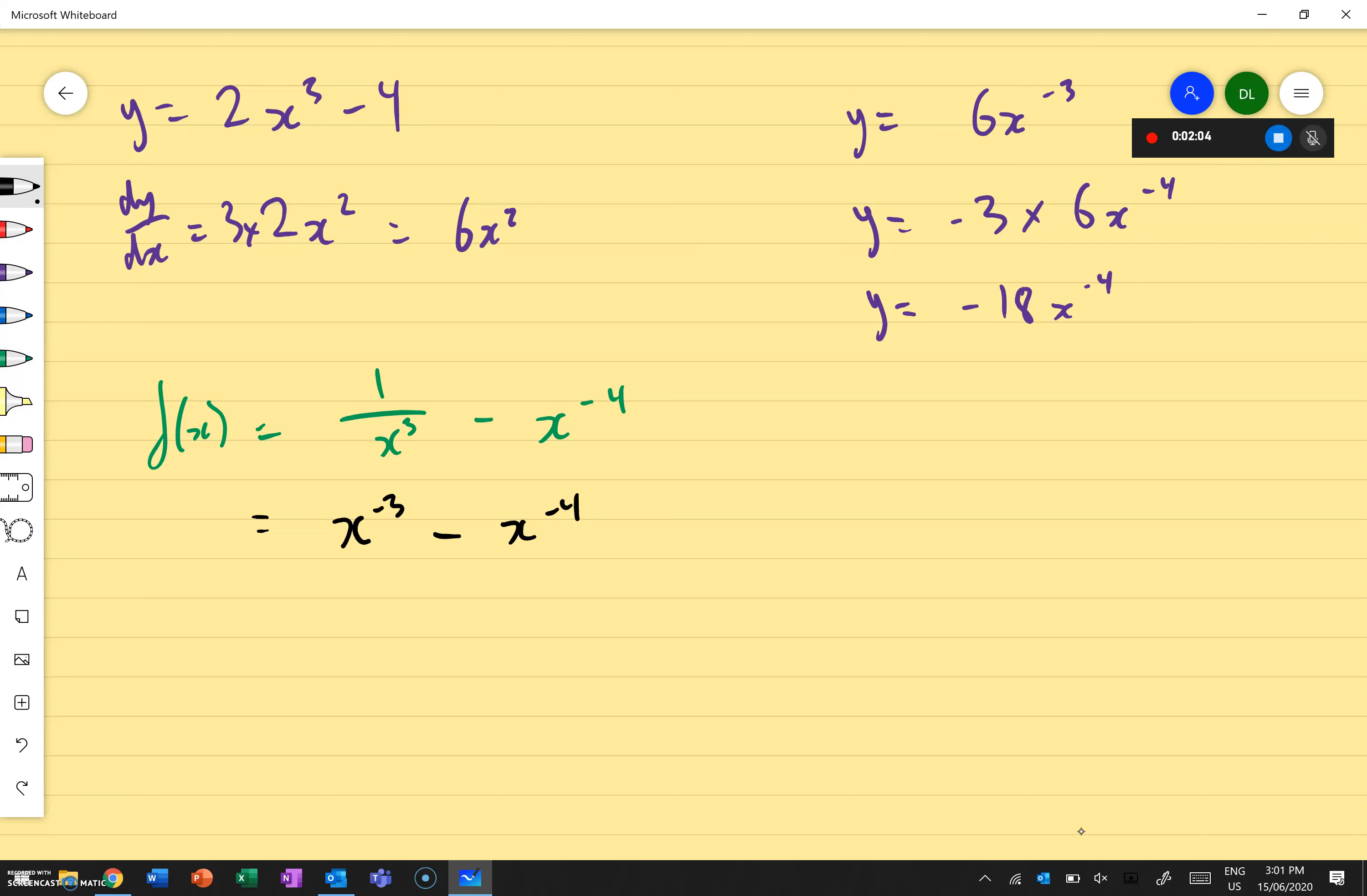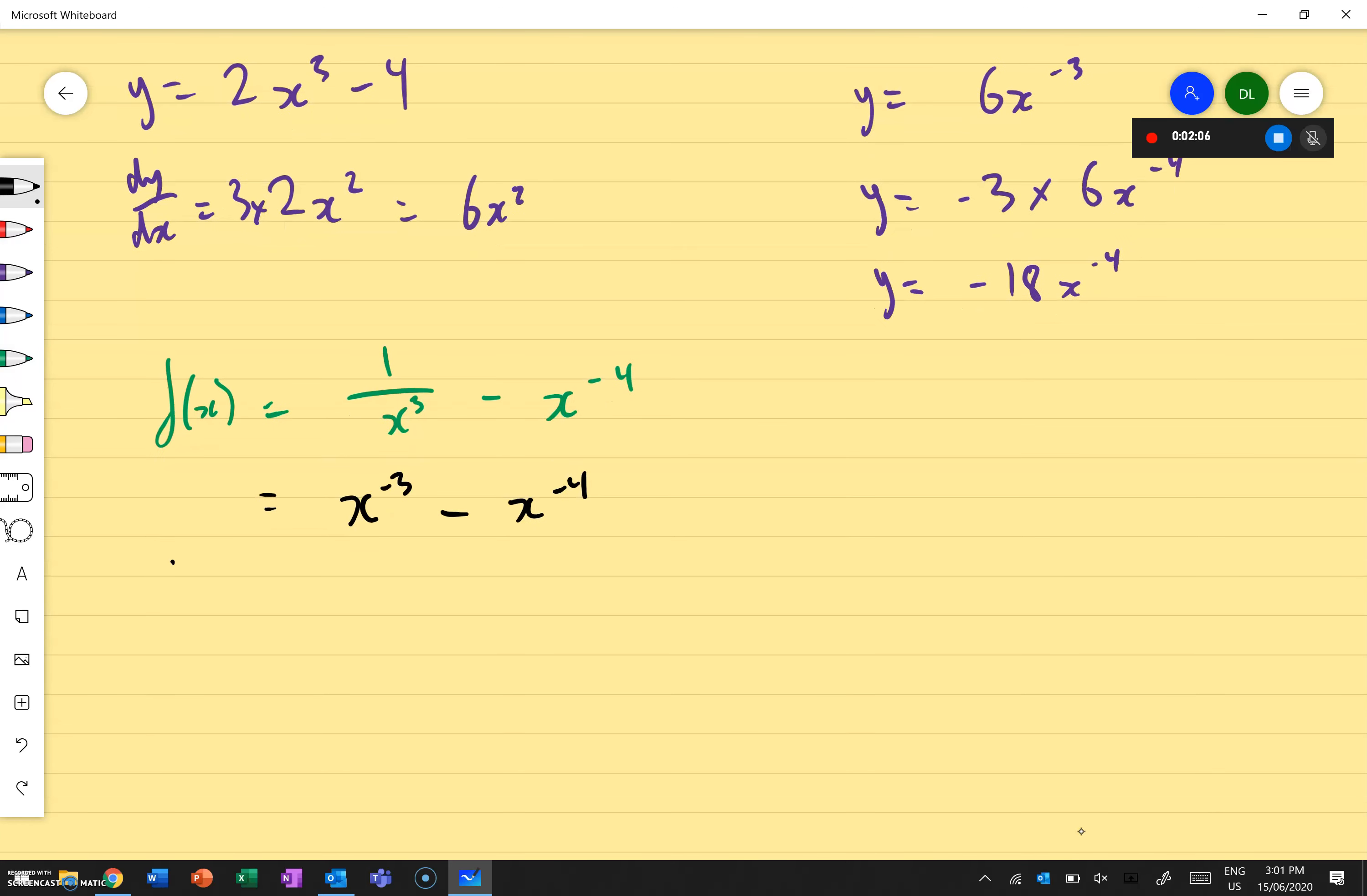From there, I do the exact same thing. I say, well, f dash x equals negative 3x negative 4 minus negative 4 times x negative 5. So what I've done is I bring out the power to the front and then bring the power down and end up with f dash x equals negative 3x power of negative 4 plus 4x power of negative 5. Any questions about that?